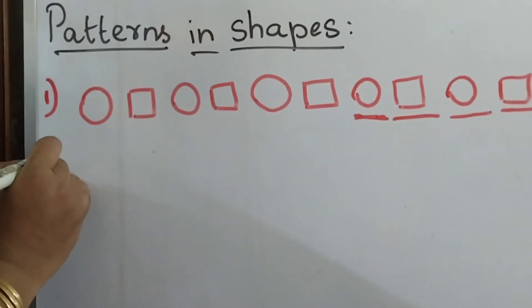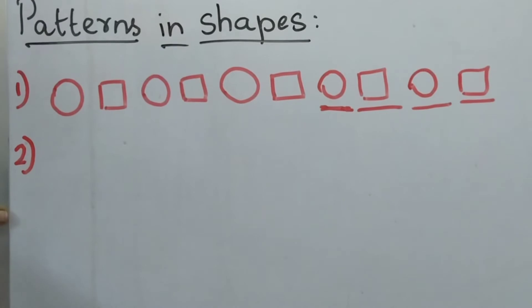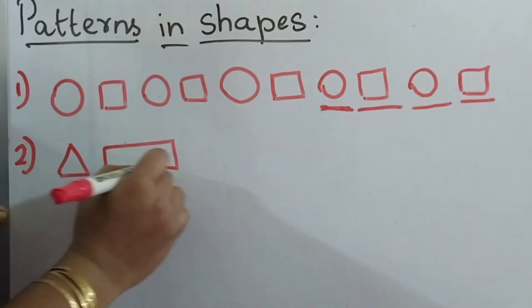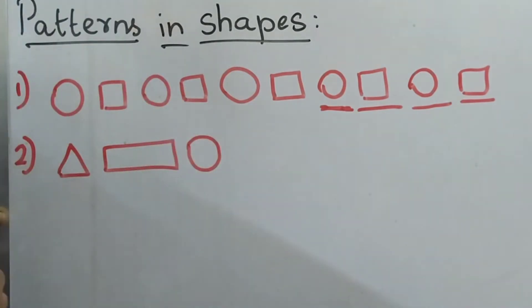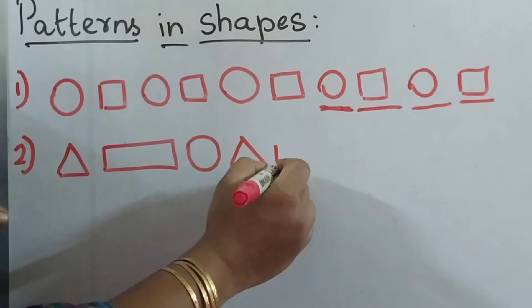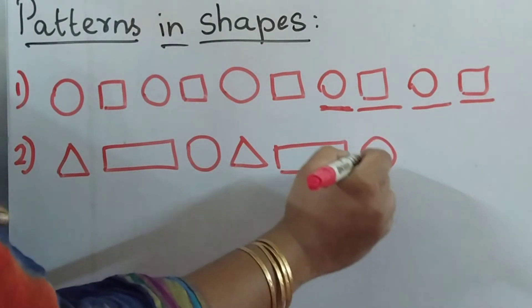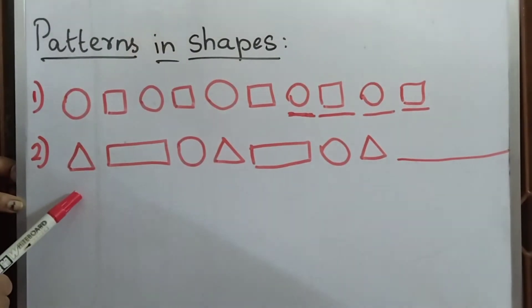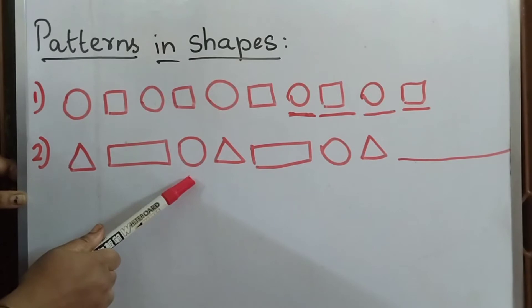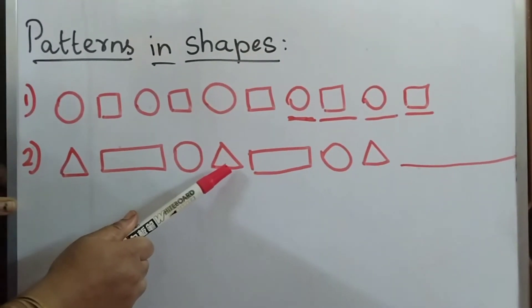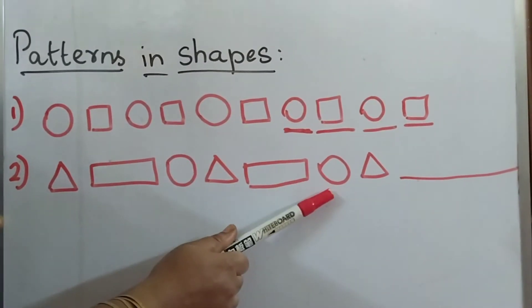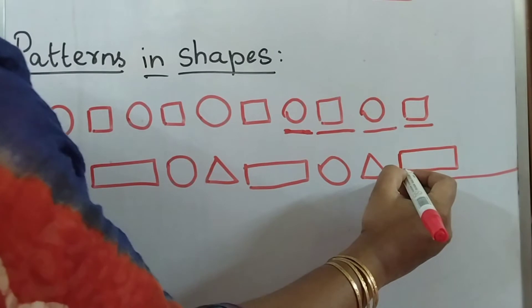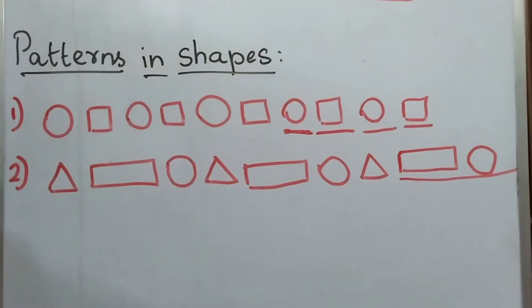Now let's see the sequence of another pattern. Triangle, rectangle, circle. Triangle, rectangle, circle. Triangle, rectangle, circle. The pattern sequence continues. What will be next? Triangle — and the next one will be rectangle. Then circle. The sequence continues.